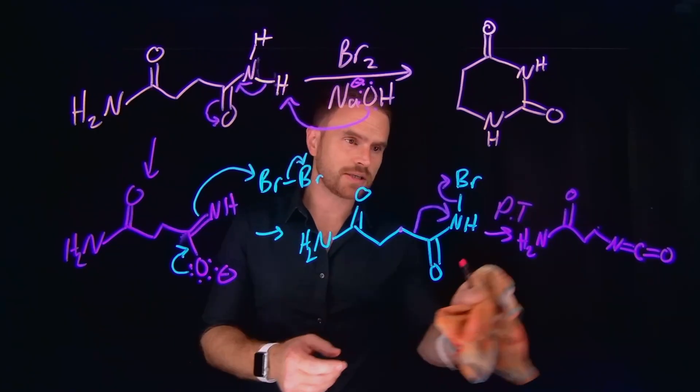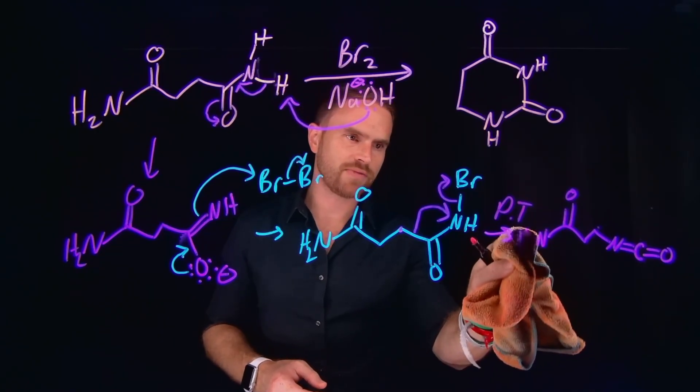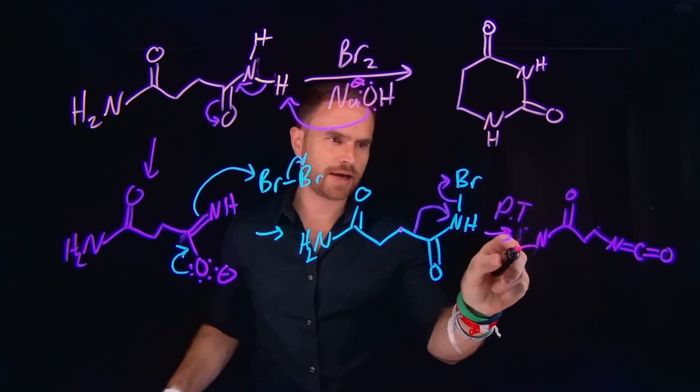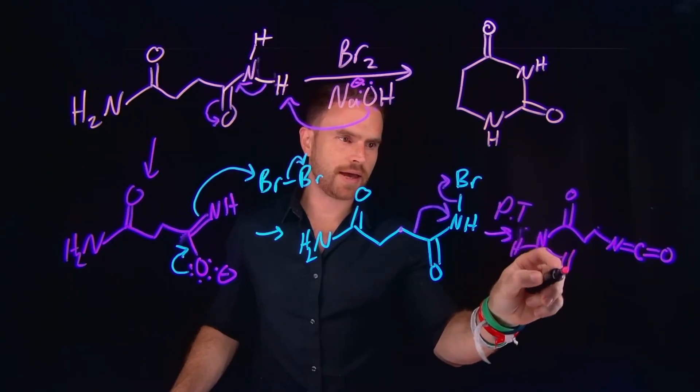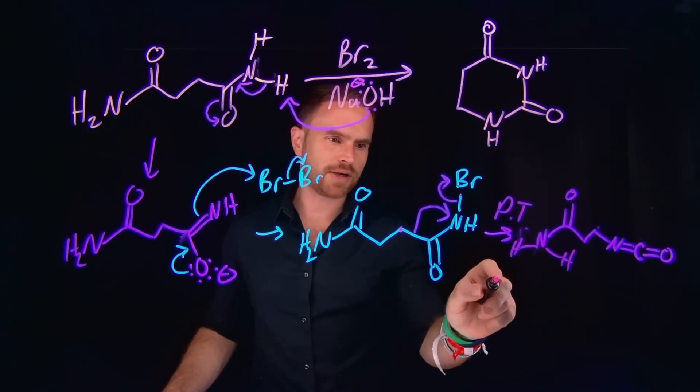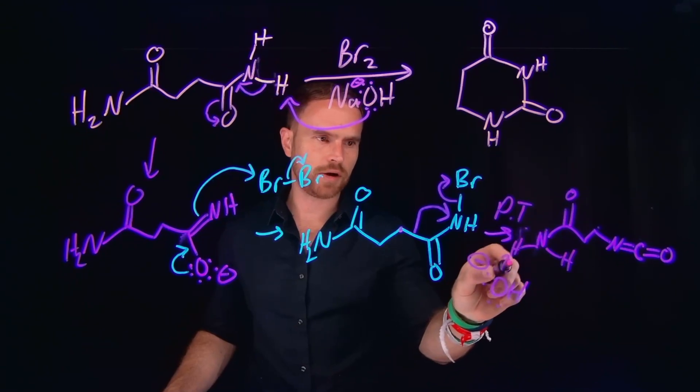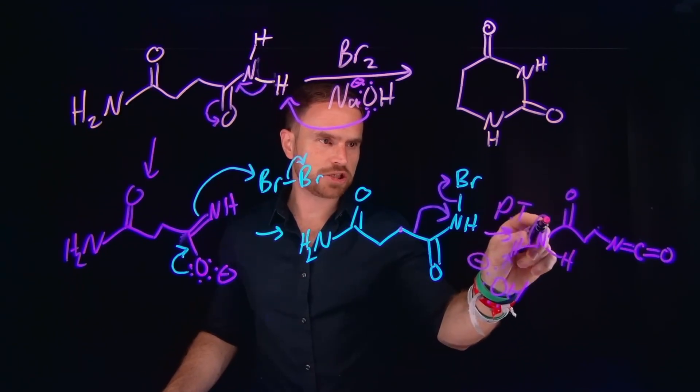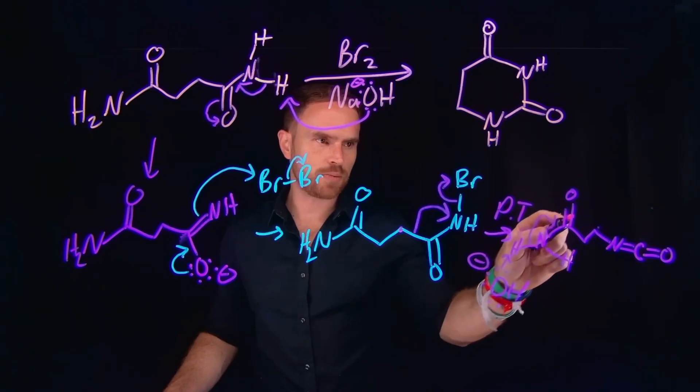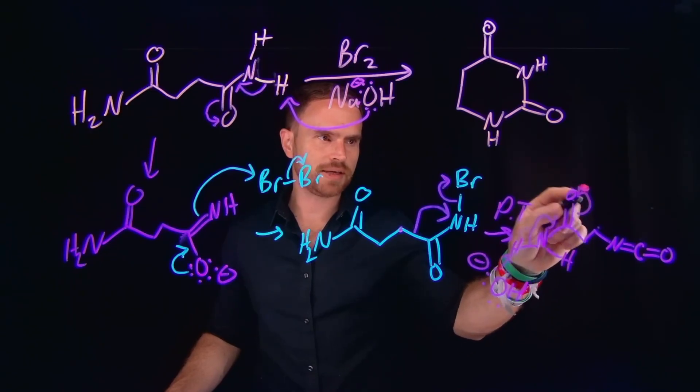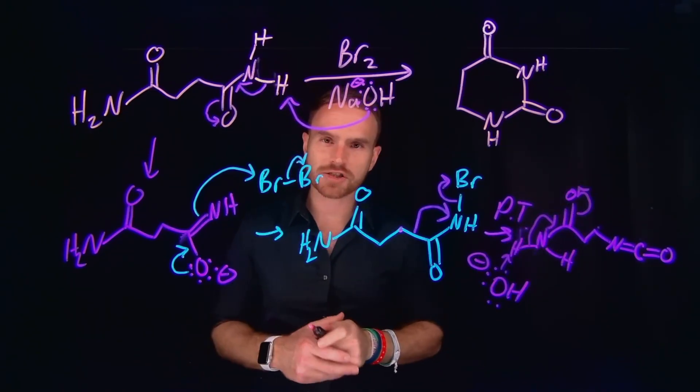And from here, now a similar process can occur. So remember, previously I drew in these nitrogen to hydrogen bonds. So if we do that again, and we have more hydroxide present in our solution, then this hydroxide can actually come in and deprotonate another one of these nitrogen to hydrogen bonds. And that, again, is going to cause these electrons to shift over to make a carbon to nitrogen double bond, also shifting up these electrons to make our negatively charged oxygen, where we've regenerated what is kind of like a pseudoenolate, like we did previously.